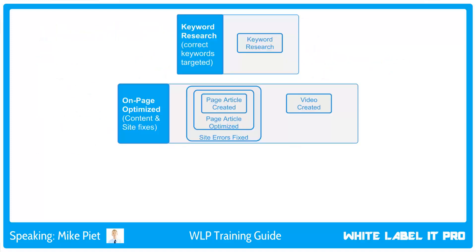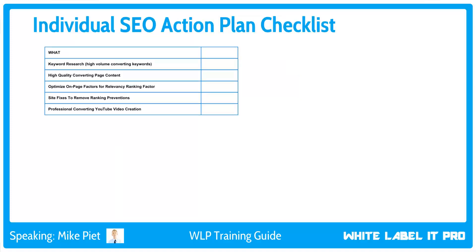Regardless of whether you order it or not, we'll add the YouTube video to our big picture visual map and to our checklist. You may already have a video in place, or you may need it created — either way, it works in our strategy. We'll have a video for each keyword group.